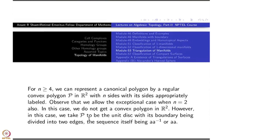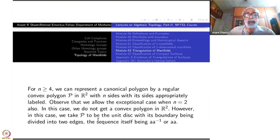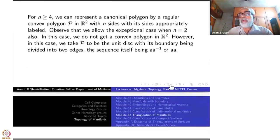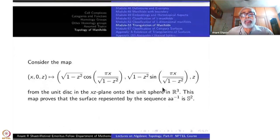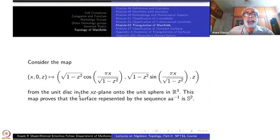However, in case N equal to 2, we take P with a unit disc, which is boundary being divided into 2 edges. The sequence itself is A, A inverse or A, A. So there are only 2 cases when N equal to 2. You consider this map from the unit disc in the X-Z plane, X0, Z I have written, onto the unit sphere in R3. This X coordinate is this one, Y coordinate is this one, Z coordinate is as it is.